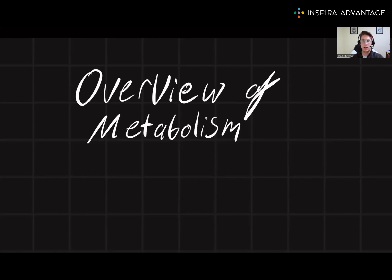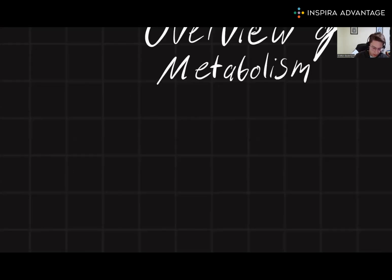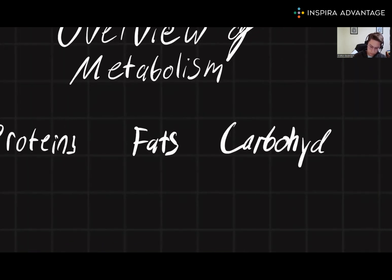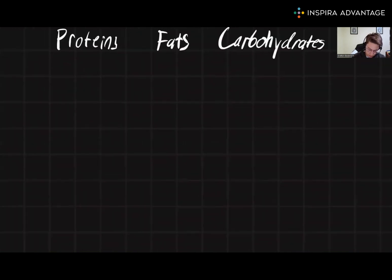There are three macromolecules you need to worry about for the MCAT. We've got proteins, we've got fats, and we have carbohydrates. Carbohydrates are going to primarily enter metabolic pathways through glycolysis. So let's draw that first.